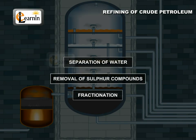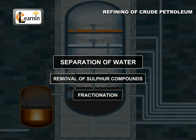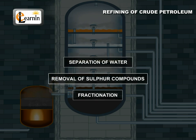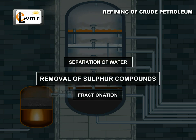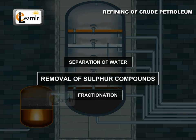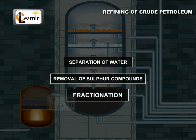The process of refining involves three steps. One, separation of water. Two, removal of sulfur compounds. And three, fractionalization.